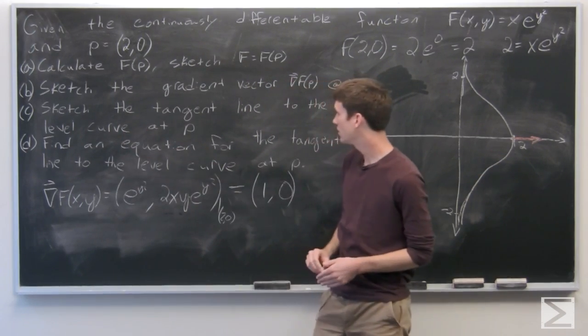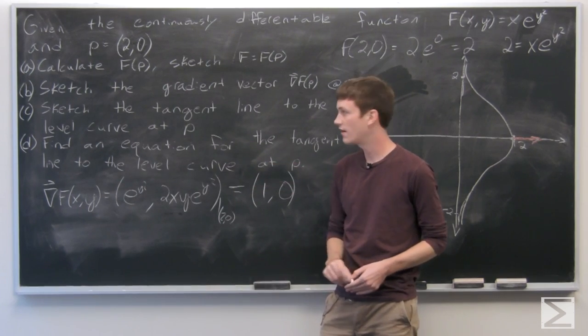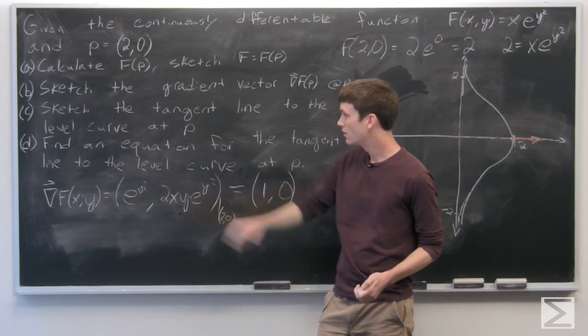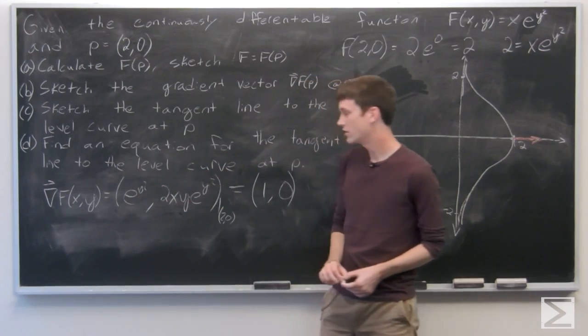And now we want to sketch the tangent line to the level curve of f at p. So first, we'll just find an equation for the tangent line,